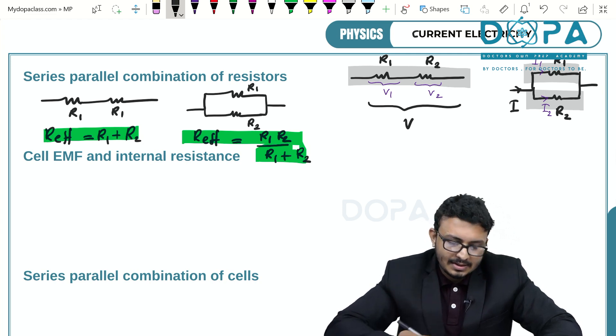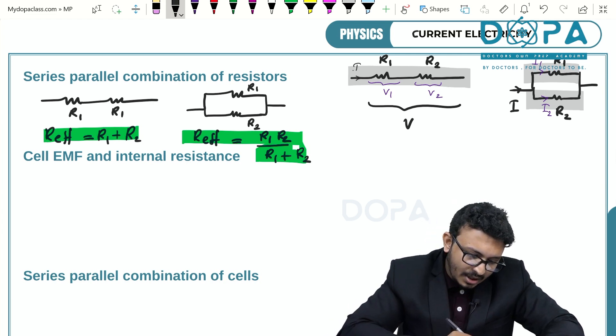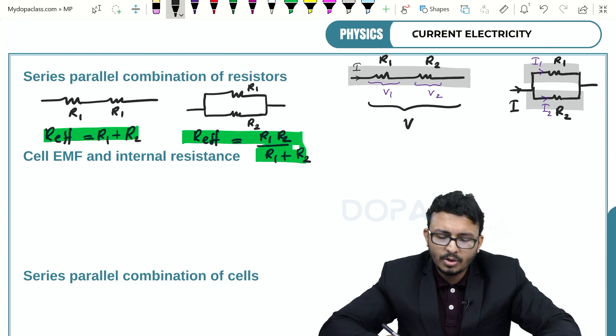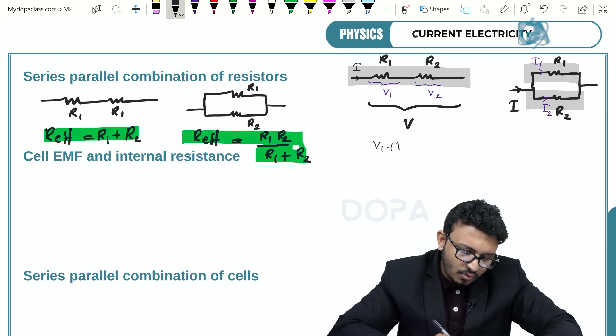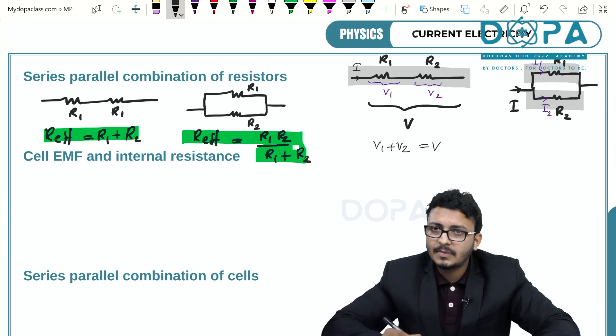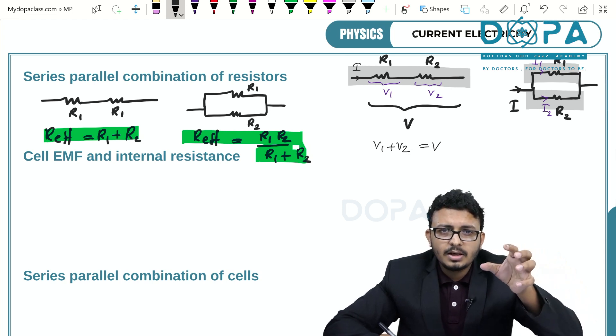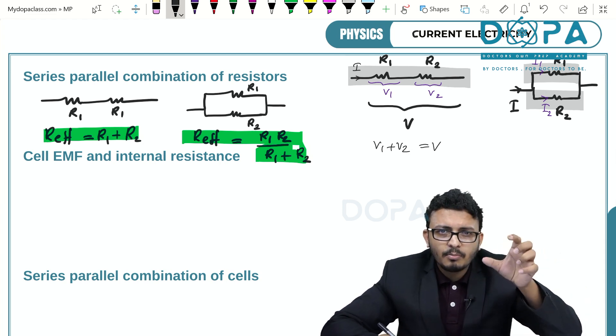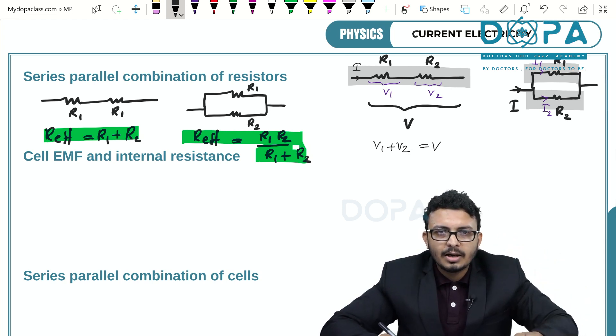So the idea behind this is if a current I is passing through it, we know that V1 plus V2 has to be equal to V. Now if they are in series, both of them must have the same current across it.